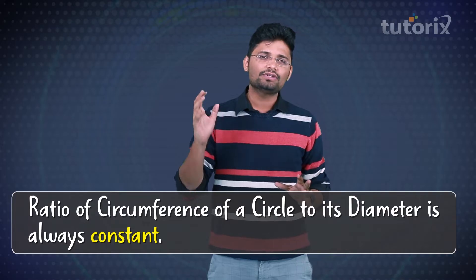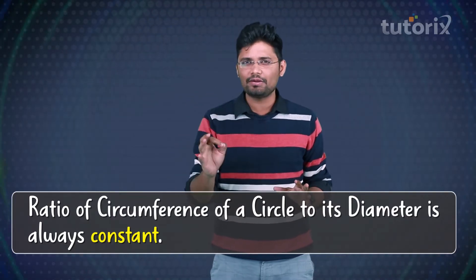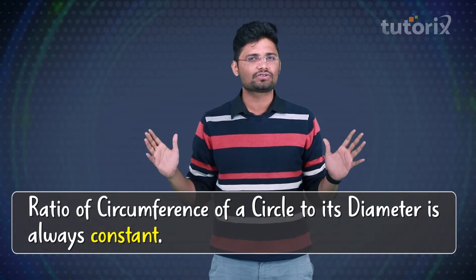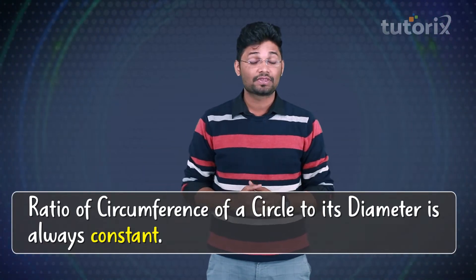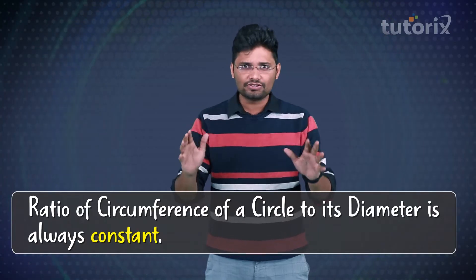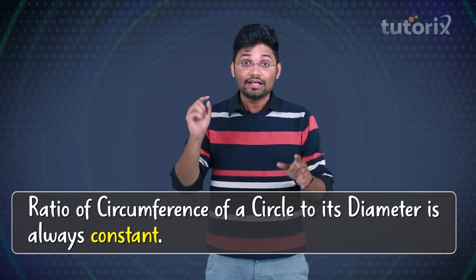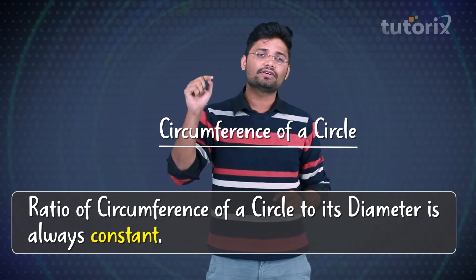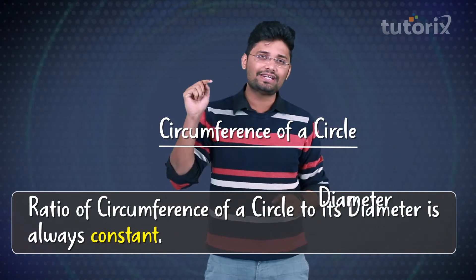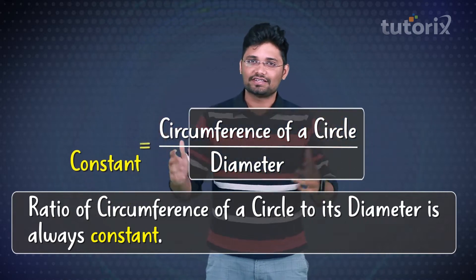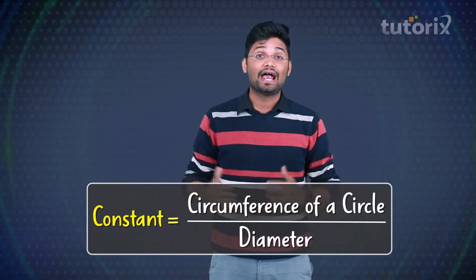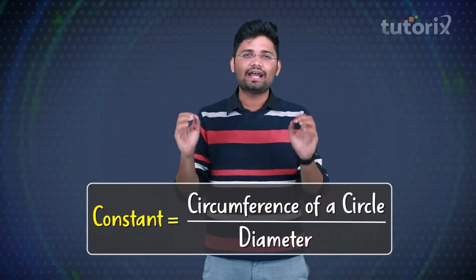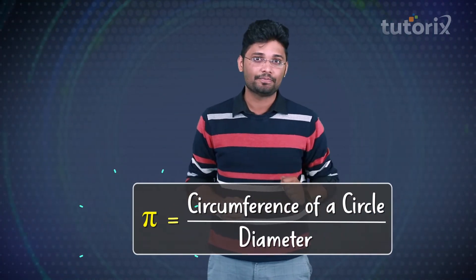How we do that is quite interesting. Did you know that the ratio of the circumference of a circle to its diameter is always constant? Irrespective of the size of the circle, the ratio of the circumference to its diameter remains the same. And we represent that ratio by a Greek letter Pi.